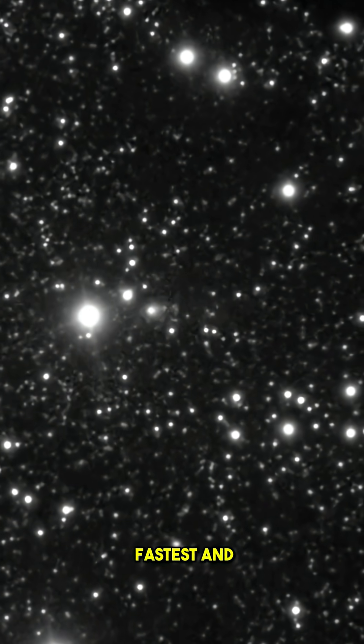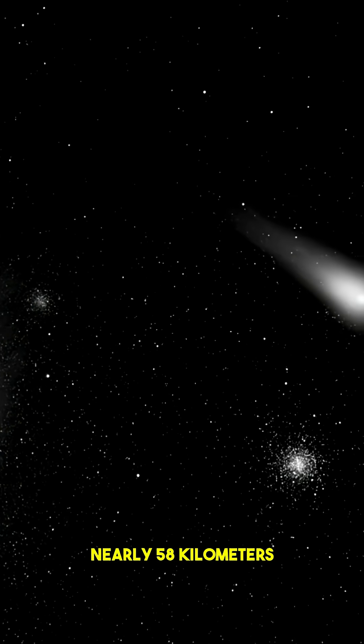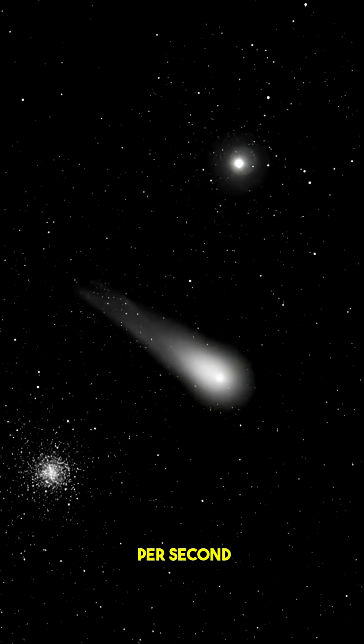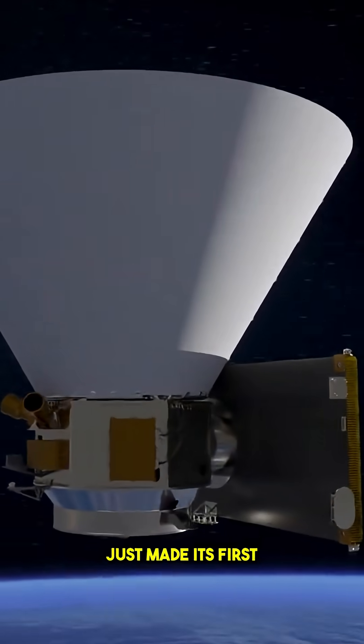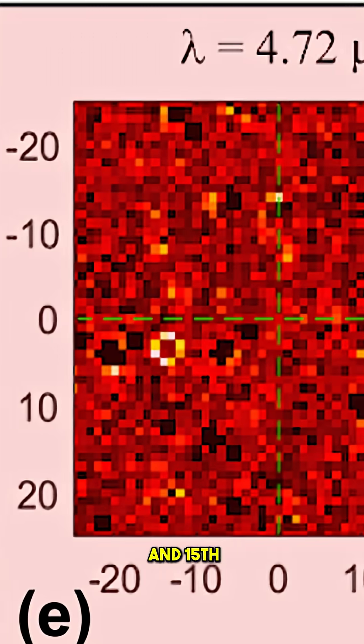3I Atlas is the fastest and largest interstellar comet yet, racing past the sun at nearly 58 kilometers per second. NASA's newest telescope, SPHEREX, just made its first science breakthrough by observing this comet between August 7th and 15th.